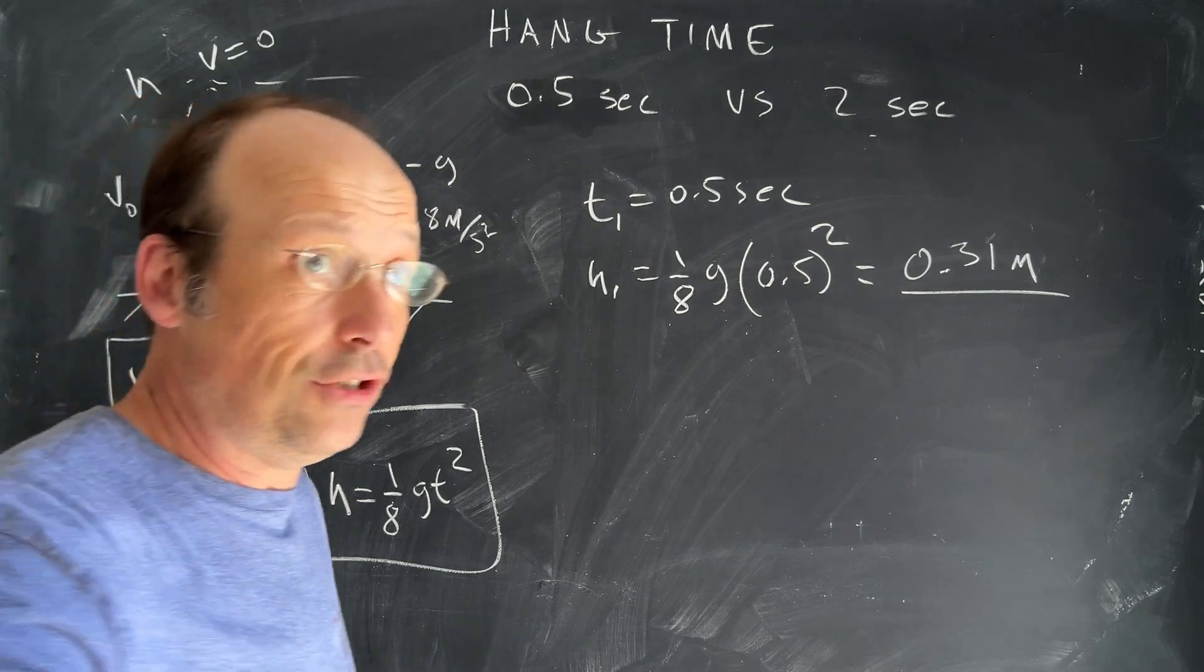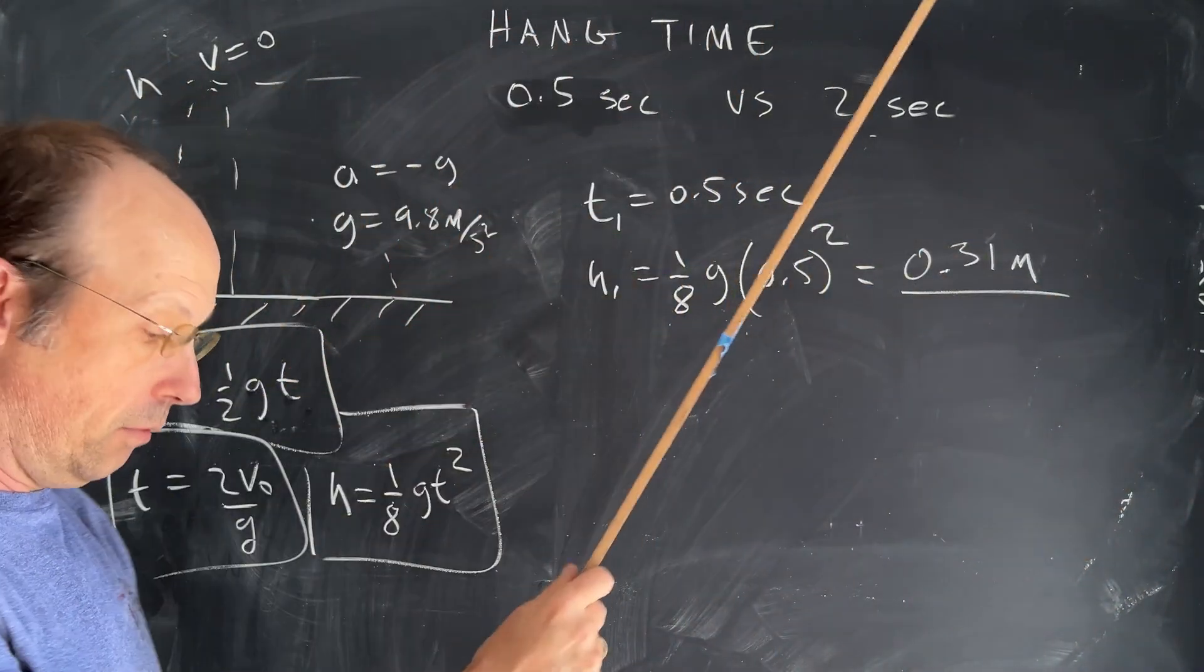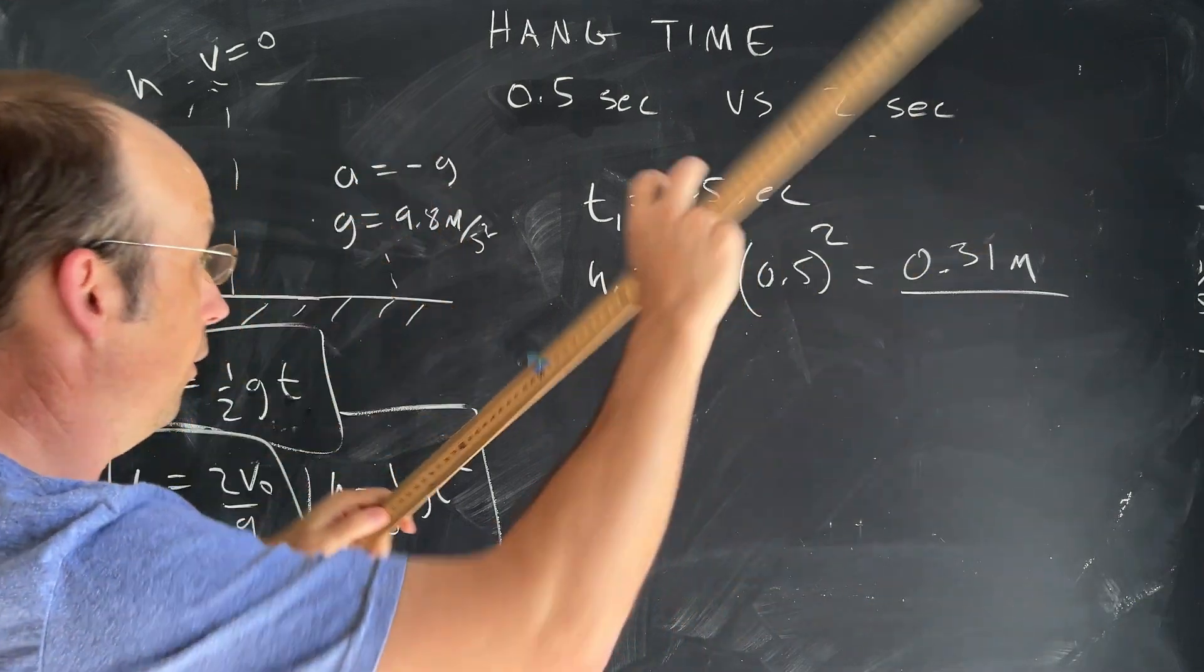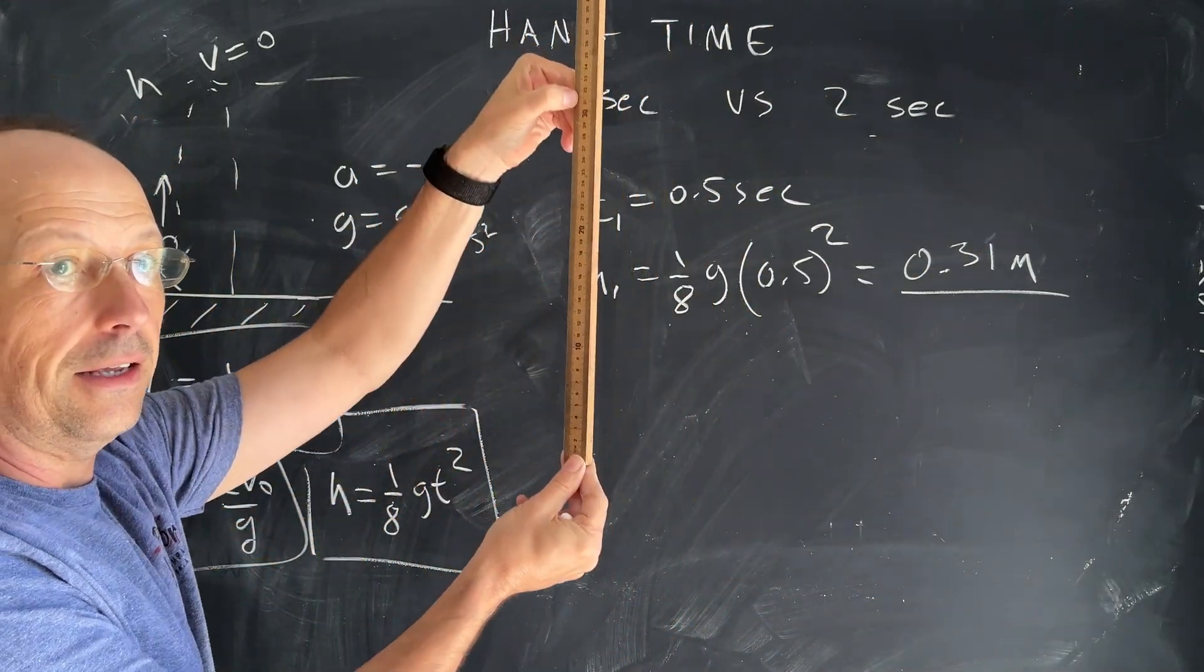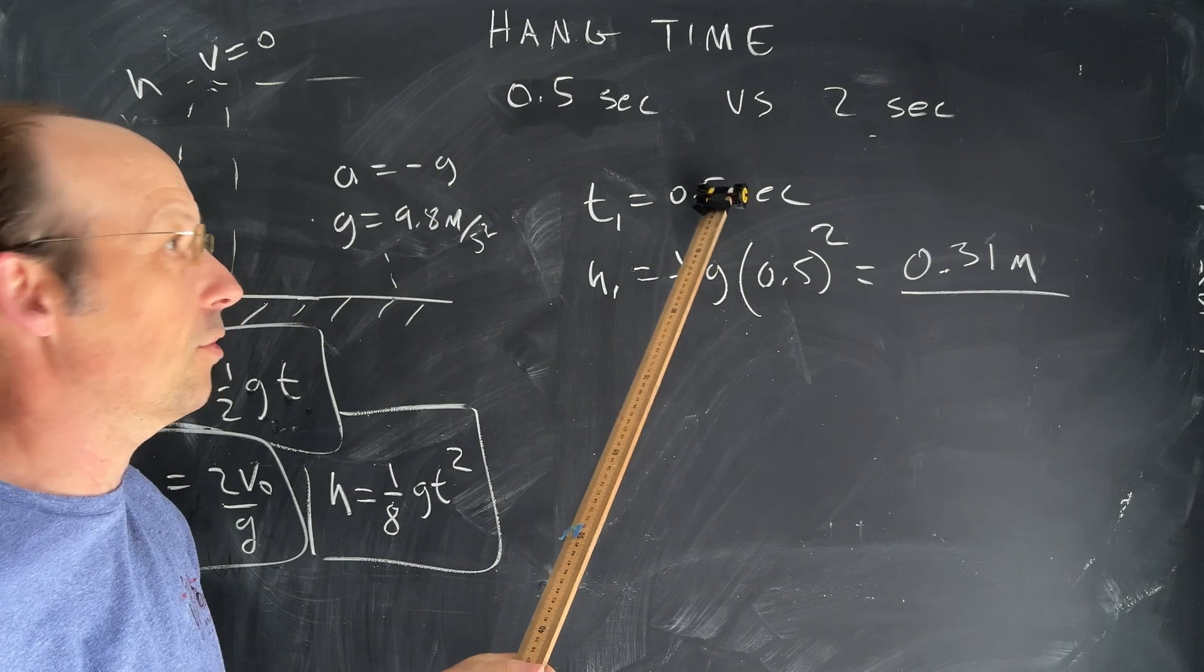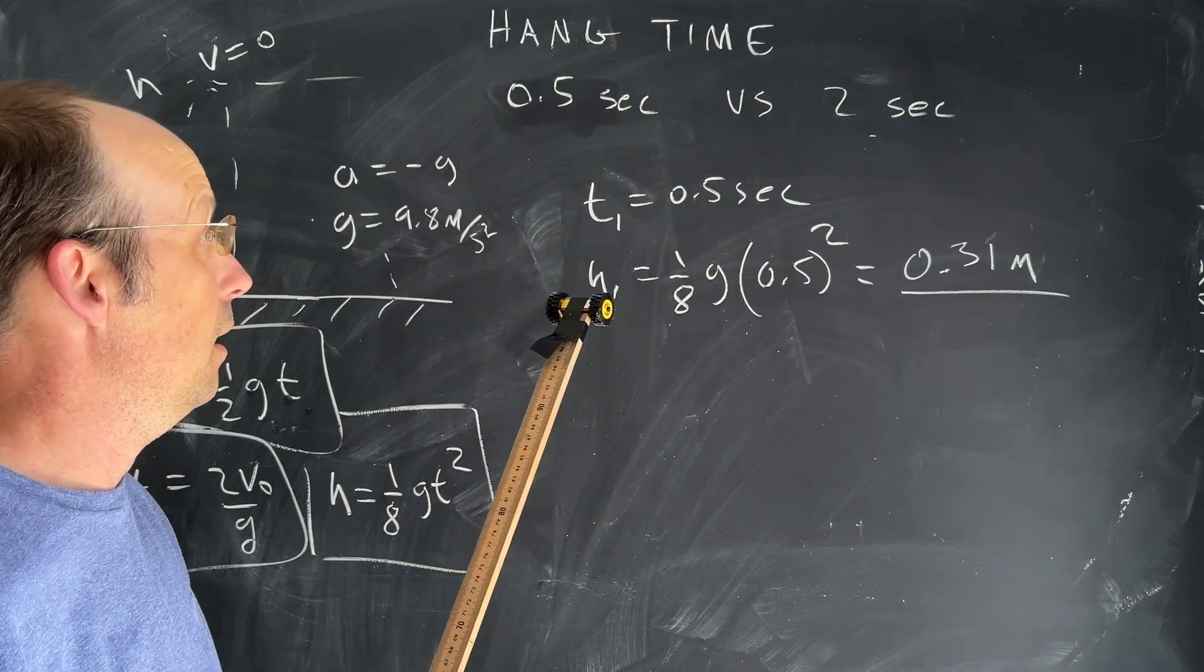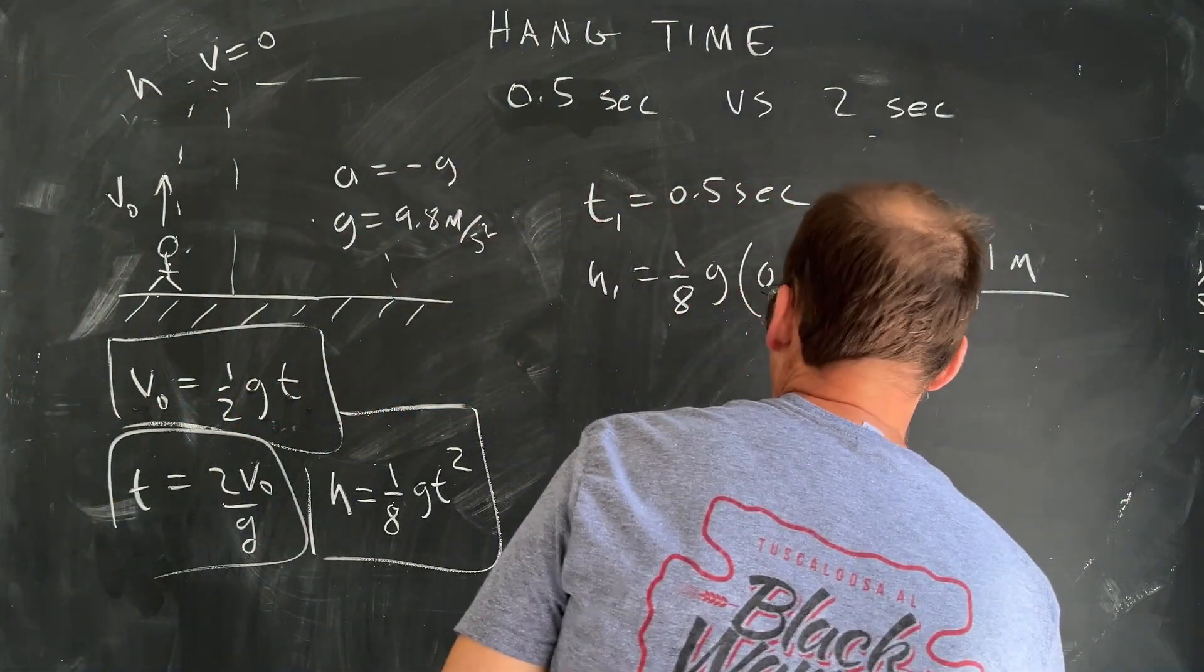Is that high? I mean, that's normal, right? Here's a meter stick. So I'm going to take that off. I'll do that later. So 0.31. That's that high. I mean, that doesn't seem very high, but it's not very long either for the total time. So you're only going up for 0.25 seconds. So I think that's okay.